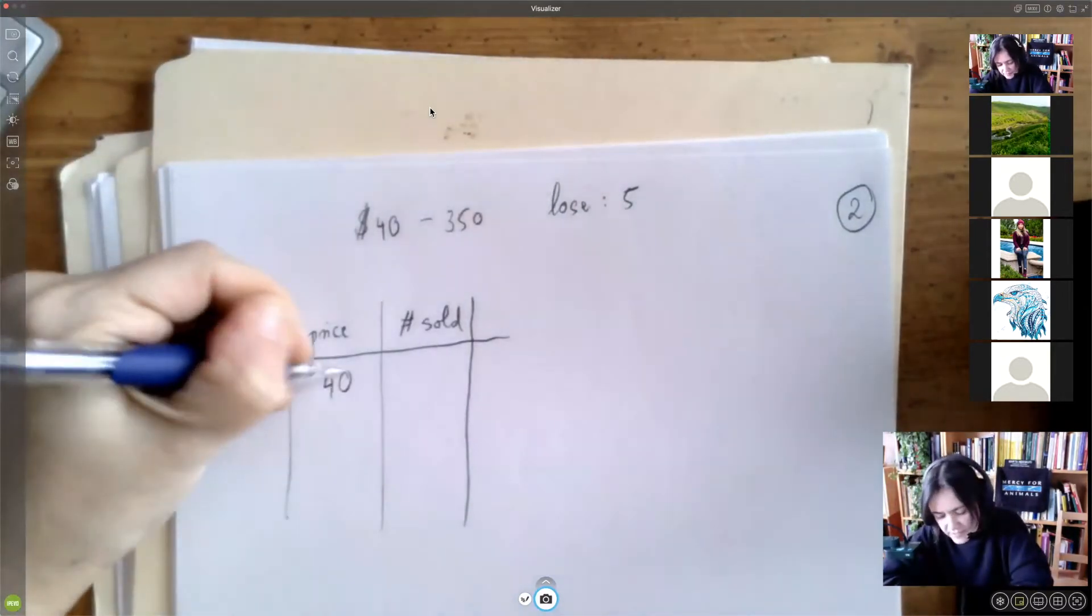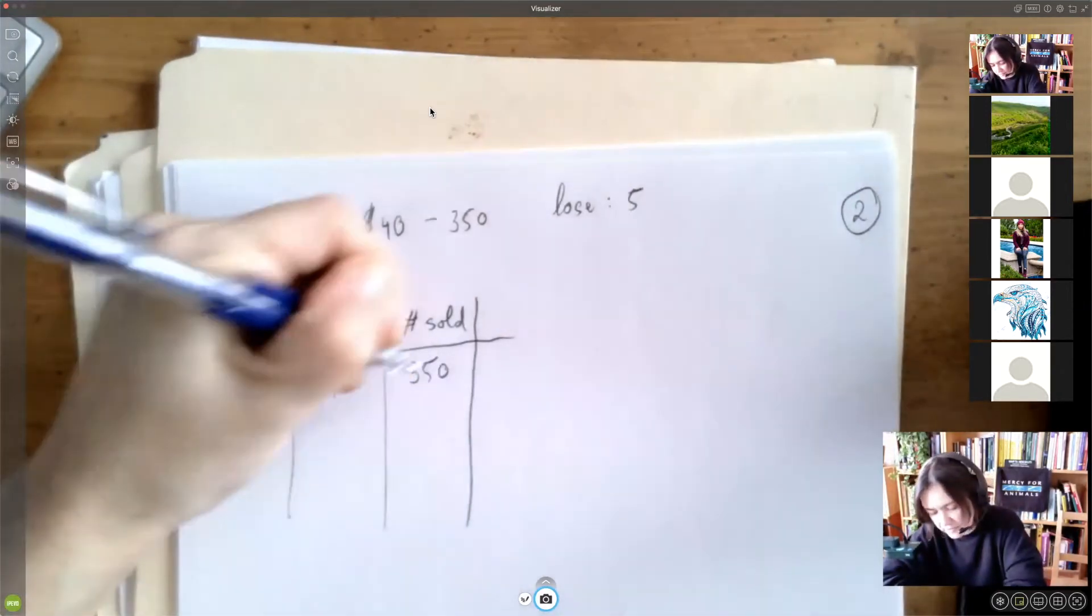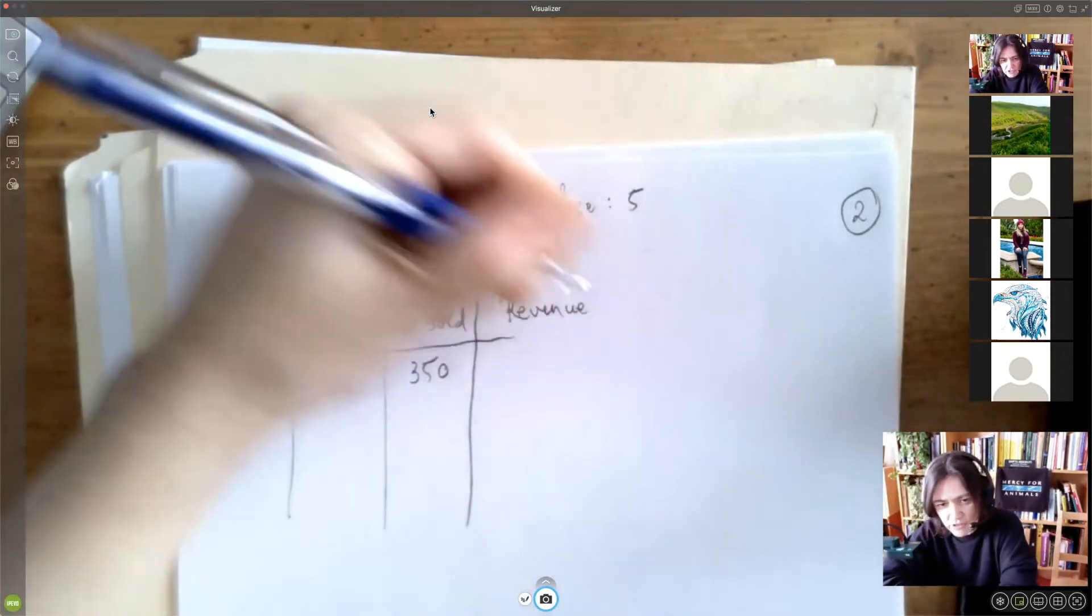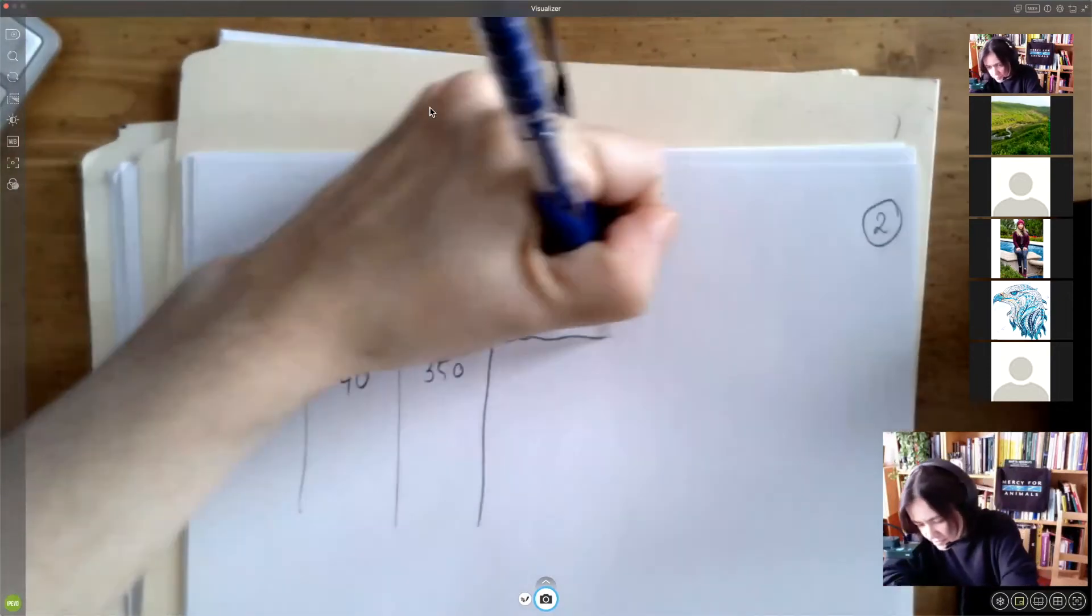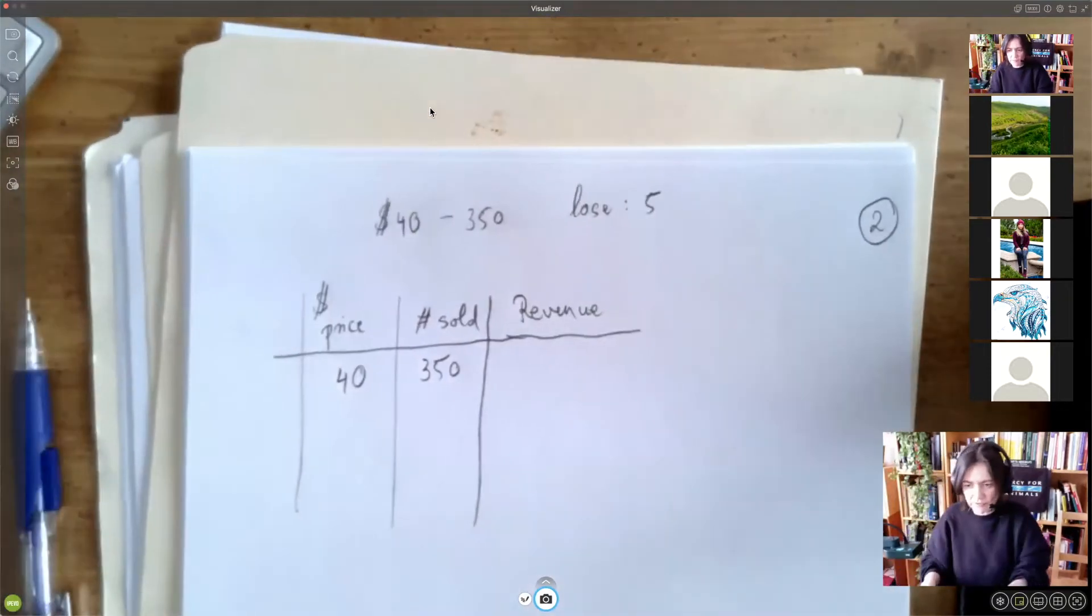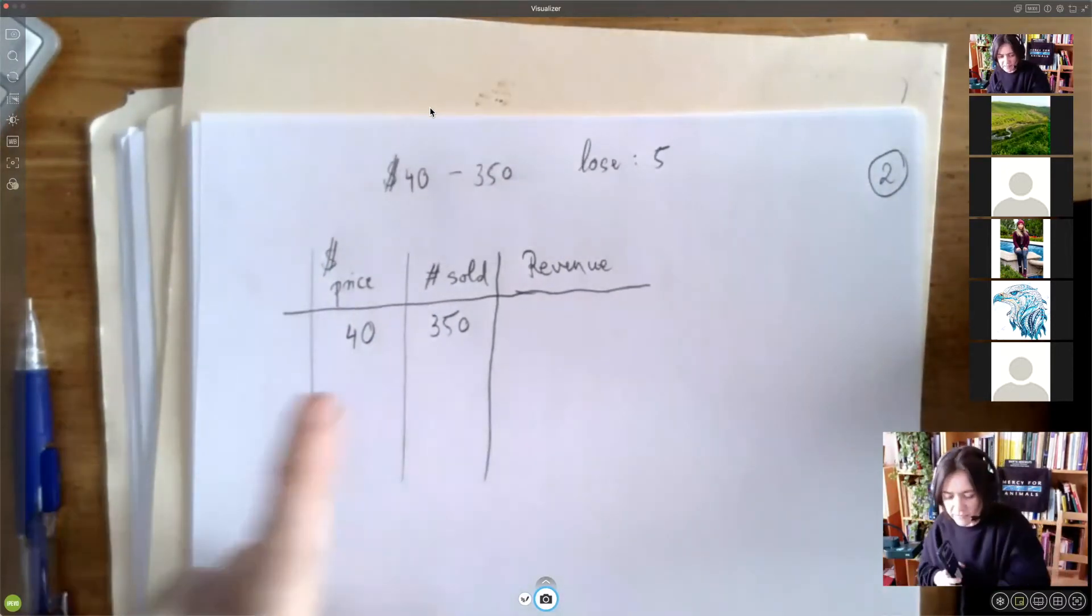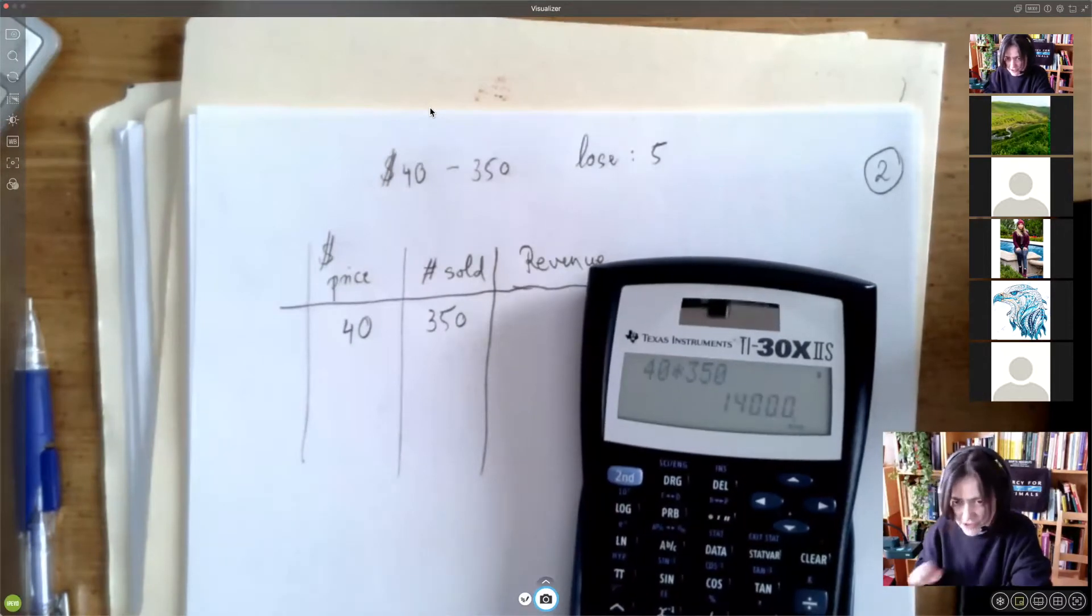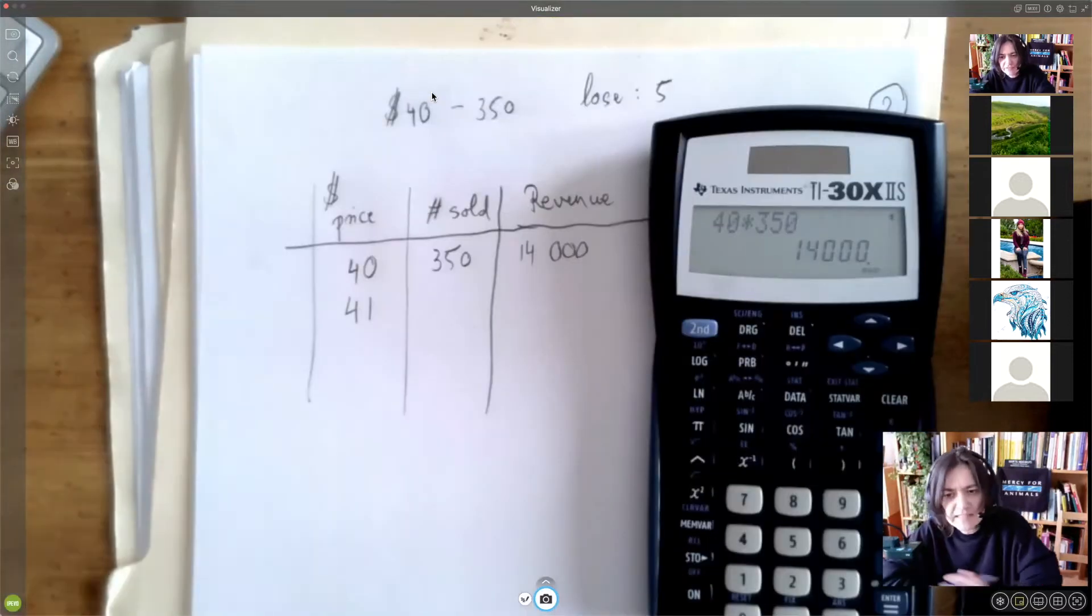So if we set the price at $40, we can then sell 350 tickets. Now, whenever you see the word revenue, that's just a fancy word to say income, like how much money is coming in. That's not the profit because for the profits, you have to subtract your costs. How much income comes in from this scenario? So it's 40 times 350. So that's 14,000. That's not bad. What happens if we raise the price? Should we raise the price?